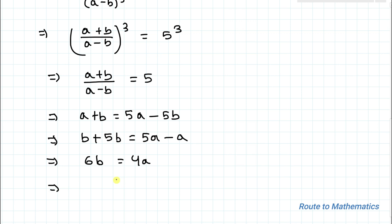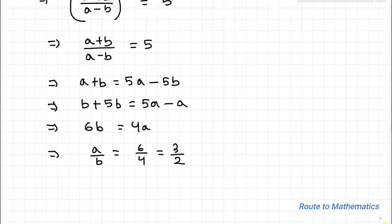This implies a/b = 6/4. Simplifying 6 by 4, we get 3 by 2. So the value of a by b, which is what we were asked to find, equals 3/2. I hope you have understood the solution. Thanks for watching. Please do subscribe to my channel and click the bell icon for more such interesting videos. Thank you.